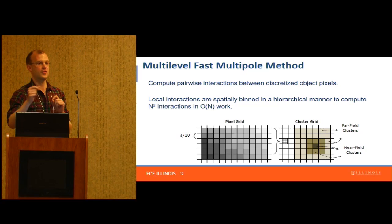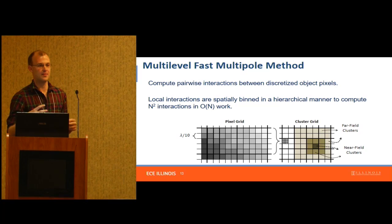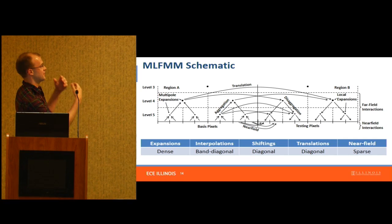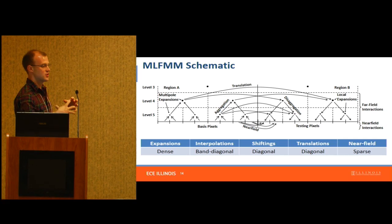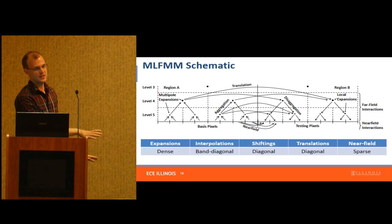For near pixels you do the direct pairwise computation, and for long-range pixels you only take into account the aggregated effect. This is called the multipole method. If you aggregate your clusters and do that again for even longer-range clusters, it becomes multilevel. You can imagine how the N-squared work reduces: with log N levels and roughly N-over-two work at each step, it comes out to order N work.